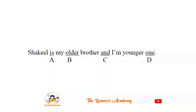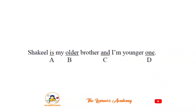Sentence: 'Shaqeel is my older brother and I am the younger one.' The error is in option B — 'older' should be 'elder.' When comparing family members, 'elder' is used, not 'older.' So the corrected sentence is: 'Shaqeel is my elder brother.' The error is option B.